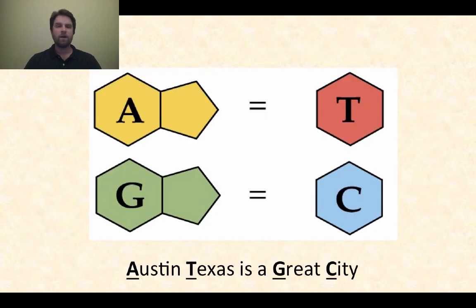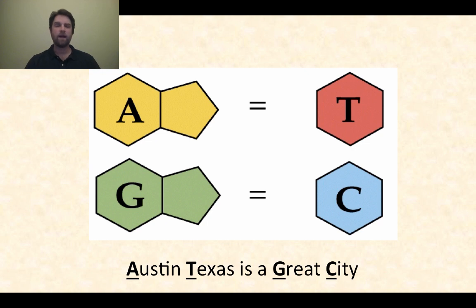Each one of these nucleotides likes to pair with another one. A likes to pair with T, and G likes to pair with C. One way to remember that is: Austin, Texas is a great city — A, T, G, C. Those are the ones that go together. G does not want to pair with T, and C does not want to pair with A. That's just the way it works.